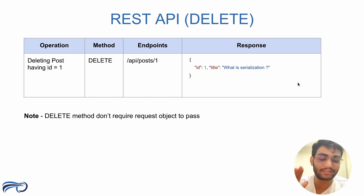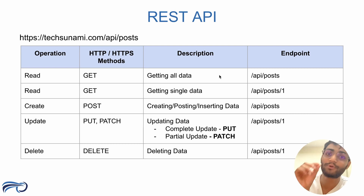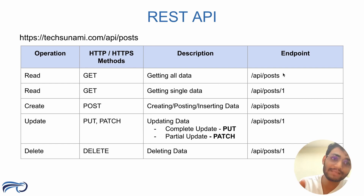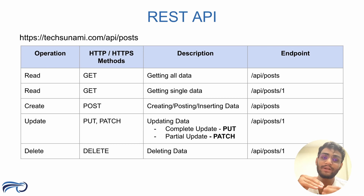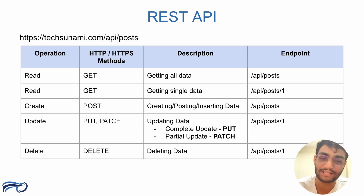Let's summarize all the methods we learned. Taking the base URL 'https://example.com', for Read (GET all): endpoint is '/api/posts'; for a single record: '/api/posts/1'. For Create (POST): endpoint is '/api/posts'. For Update, there are two types — PUT and PATCH — both use the endpoint '/api/posts/1'. For Delete: endpoint is '/api/posts/1'.